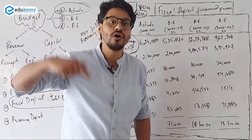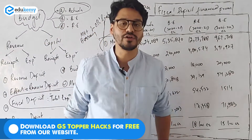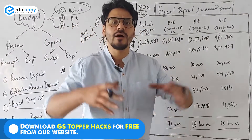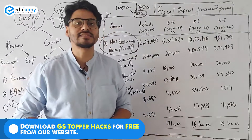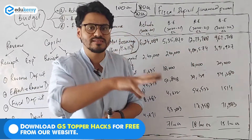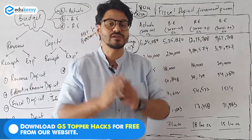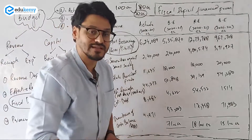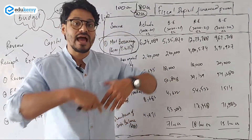In the budget estimate of 2021 — the year of COVID — the estimate was that 7 lakh crore would be taken from the market and other liabilities to finance the fiscal deficit. But after COVID hit, it was realized that the actual deficit was much more, because the government had to continuously spend money due to COVID.